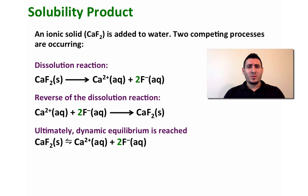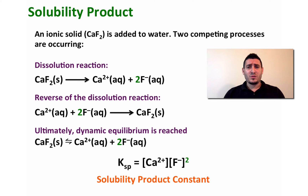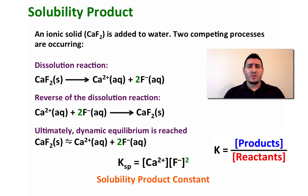For this equilibrium, we can write the following solubility product, which is Ksp — sp for solubility product — equal to the concentration of Ca²⁺ multiplied by the concentration of F⁻. This is an equilibrium constant, which means it is written as the concentration of products divided by the concentration of reactants.